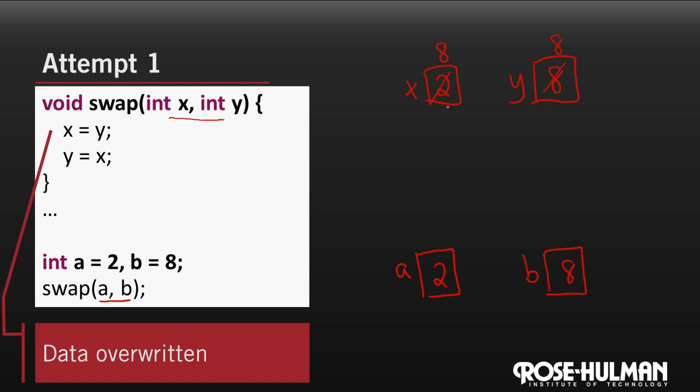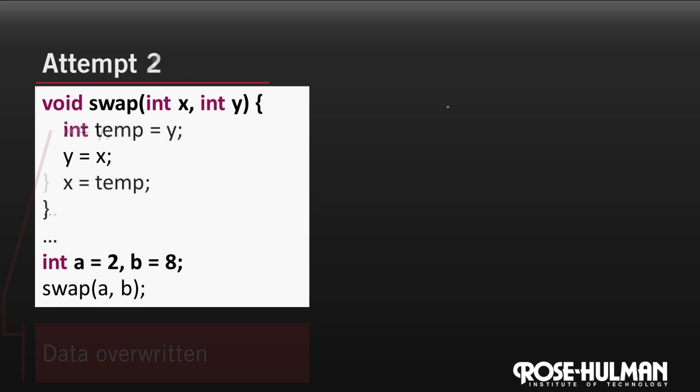So the solution here to our data being overwritten is to have some sort of a temporary variable where we can hold one of the pieces of data while we do the swap. Our second attempt does just that. A is two. B is eight. Call the function. The values get copied up into the parameters x and y. Inside the swap function we have a temporary variable, temp.